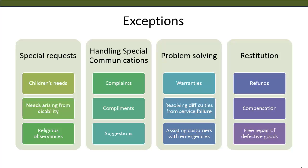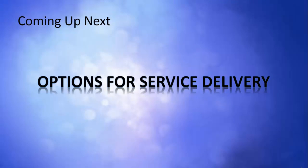We have finished examining the eight petals of the flower of service and what they consist of. Companies can use one or more of the petals, especially the enhancing petals, to differentiate themselves from other companies — for example, hotels offering different levels of hospitality. In the next video, we will look at the second P of services marketing, which is place, and examine the options for service delivery.